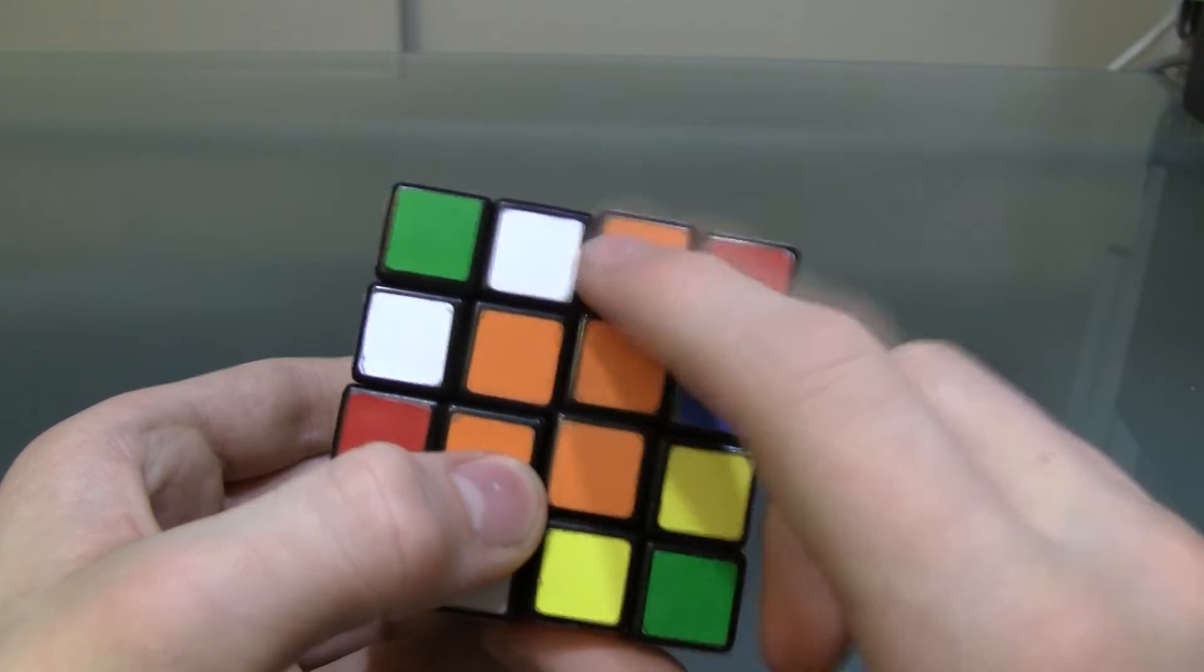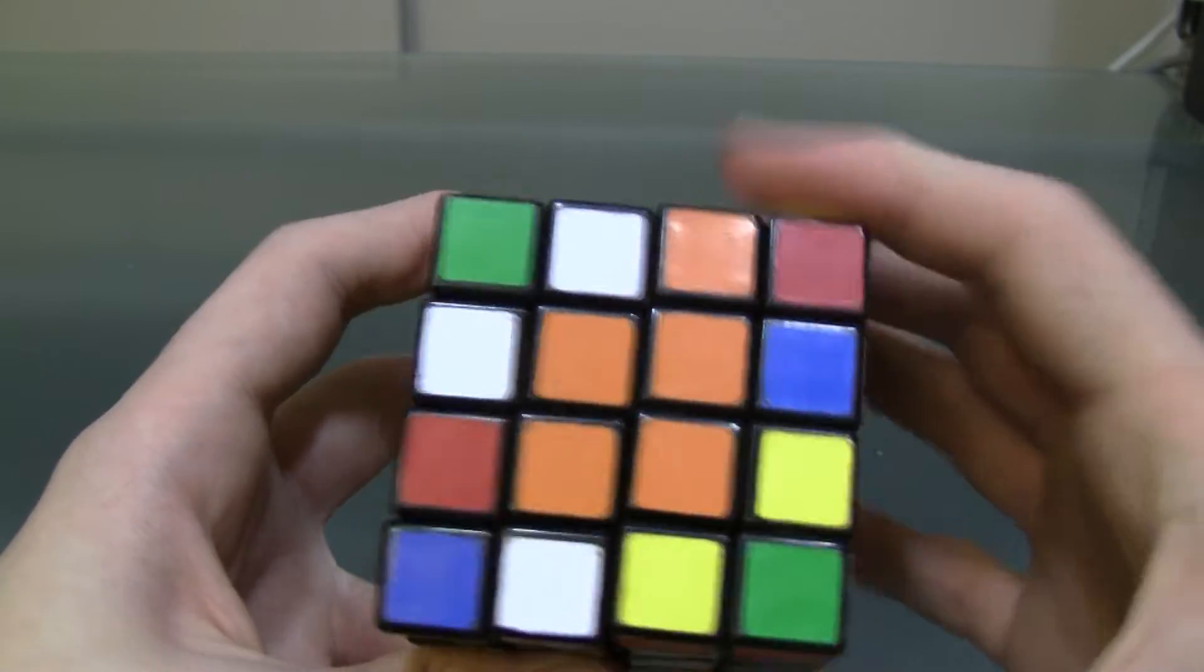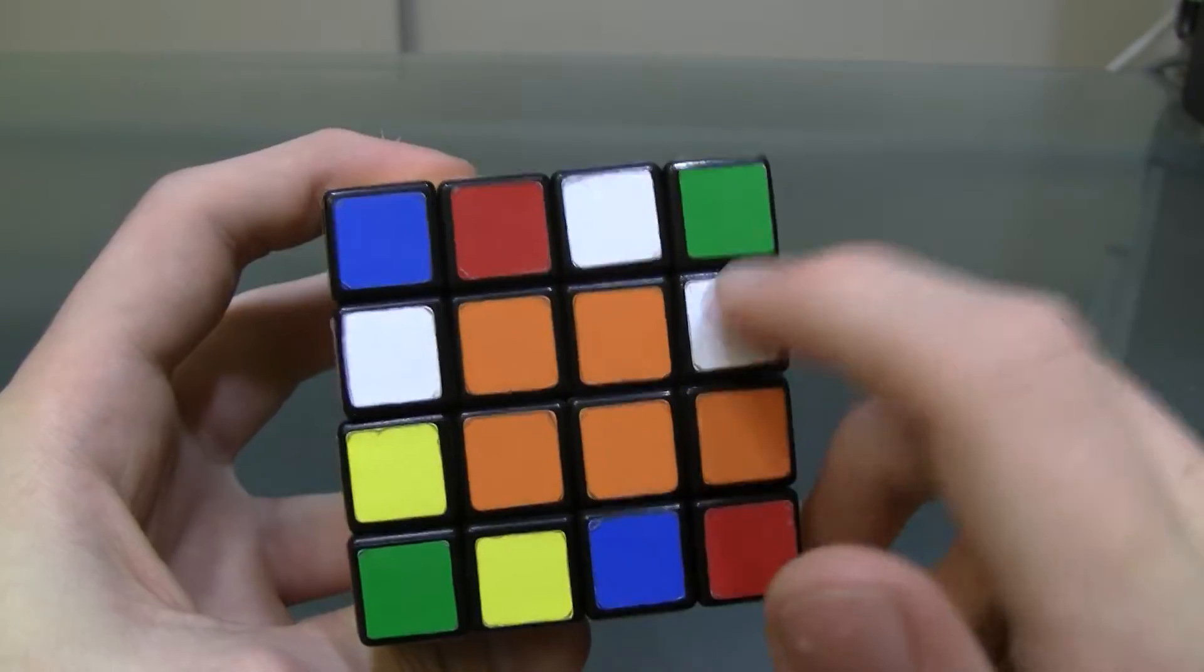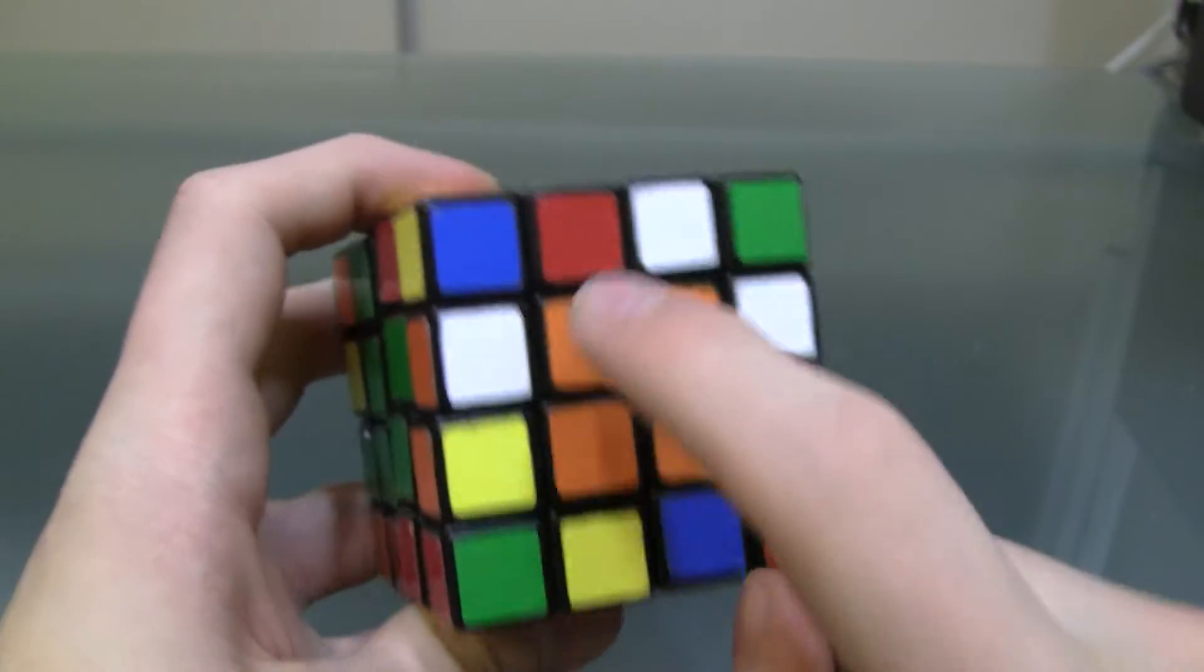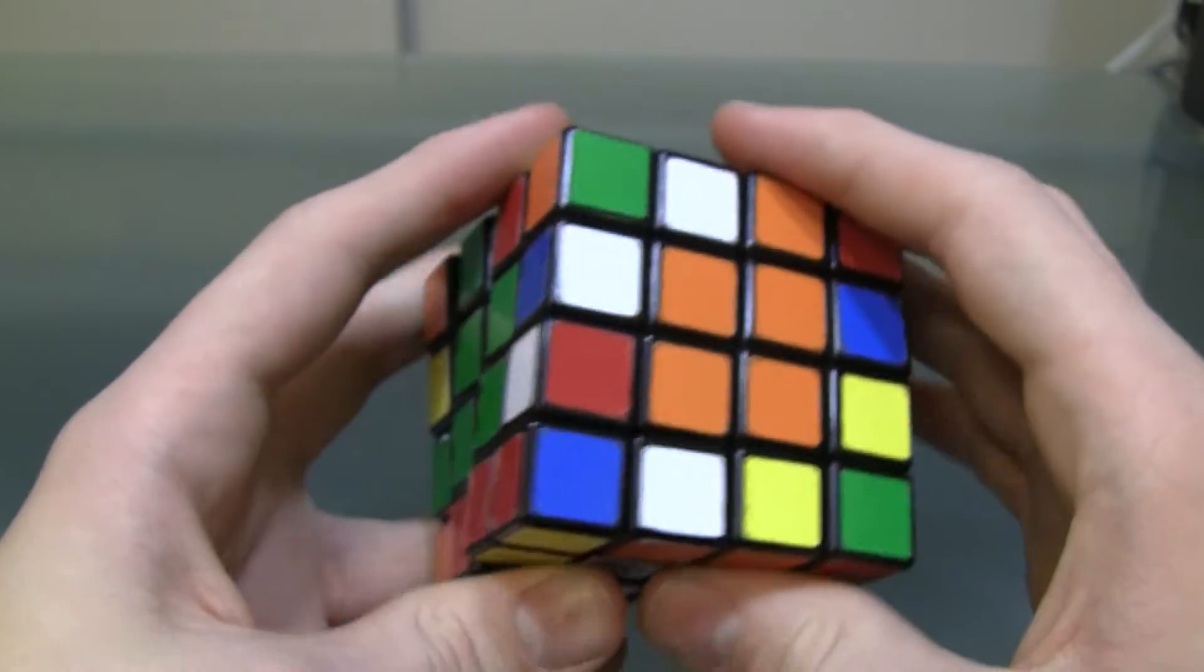And then, you need to bring this one into position. And to do that, you're going to make an F-turn. Like so. But you'll notice, when I make that F-turn, it brings this one with it. But this one should be down here.